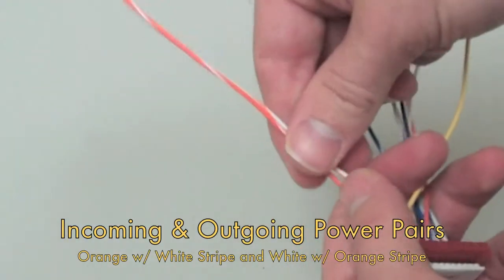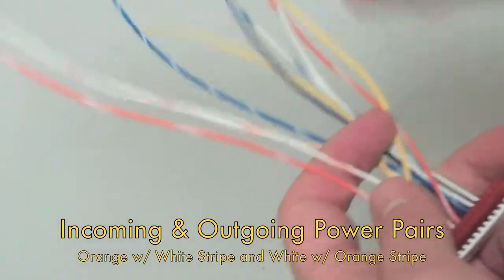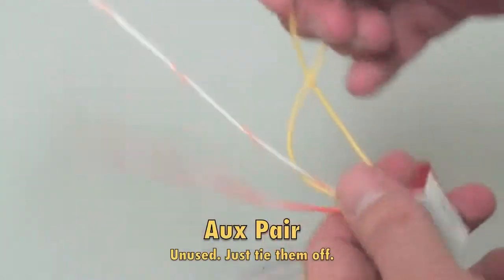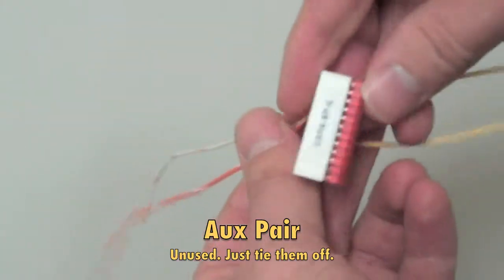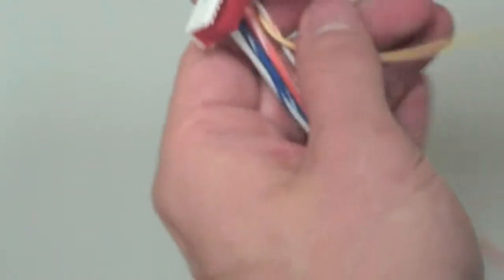And then you have an identical pair, which is also power. You can use either one for incoming or outgoing. This final wire is your aux. We're probably not going to use them. If you do see them connected, they are usually connected to dome lights.